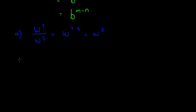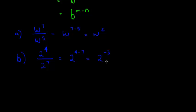How about something like 2 to the power of 4 over 2 to the power of 7? If we just use this rule, we have our base and we take the numerator exponent: 4 minus 7, which gives me 2 to the power of negative 3. We know how to do this — it means 1 divided by 2 to the power of 3, because it's a negative exponent, and that is 1 over 8.